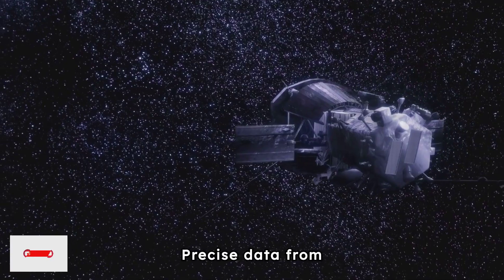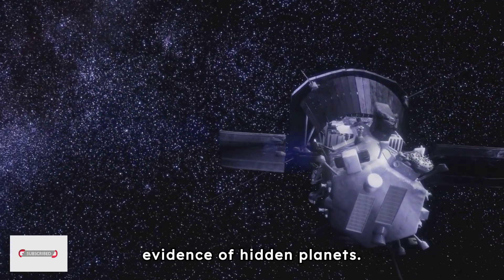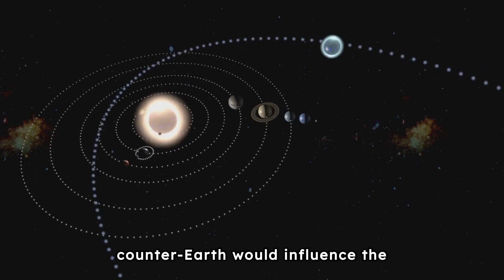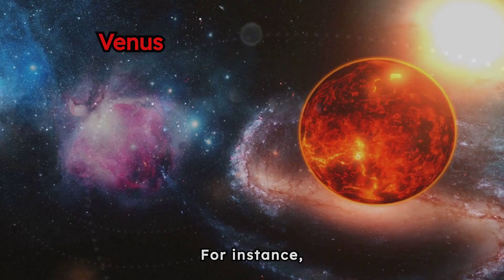Precise data from planetary positions and space probes have found no evidence of hidden planets. Additionally, a counter-Earth would influence the orbits of nearby celestial bodies.